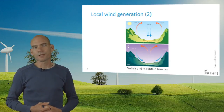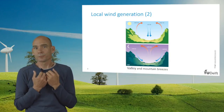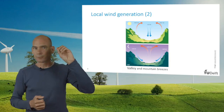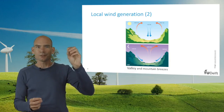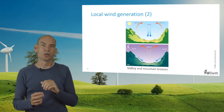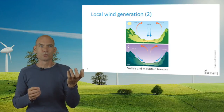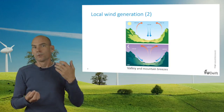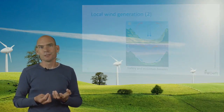A similar effect can be found in mountainous regions. In principle, the higher you go, the colder it becomes. However, during the day the surface of the mountain peaks will heat up faster than the surface of the valleys. This causes air to rise against the mountain slopes and to drop in the valleys. At night the mountain slopes will cool down quicker than the valleys, and also here the pattern reverses. With this last example of local creation of wind from solar energy, we will close off this overview of the origin of wind.